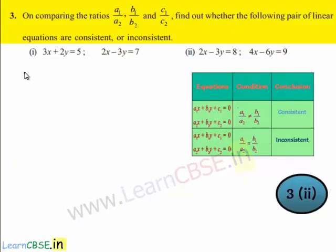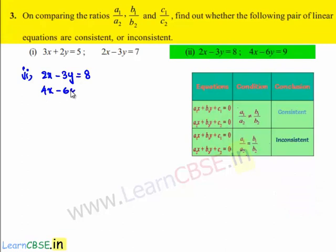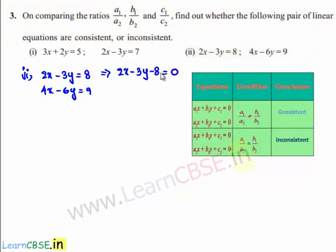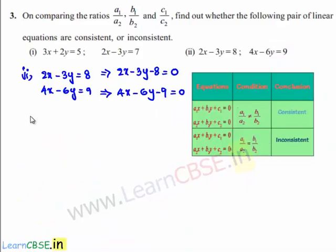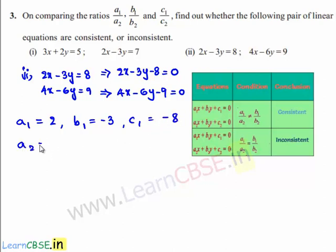Moving on to the second bit: 2x minus 3y is equal to 8 and 4x minus 6y is equal to 9. The first equation can be written as 2x minus 3y minus 8 is equal to 0, and the second equation can be written as 4x minus 6y minus 9 is equal to 0. By comparing with the standard equations, we get a1 as 2, b1 as minus 3, c1 as minus 8. In the similar manner, a2 is equal to 4.